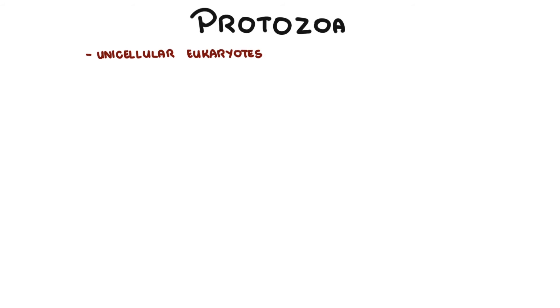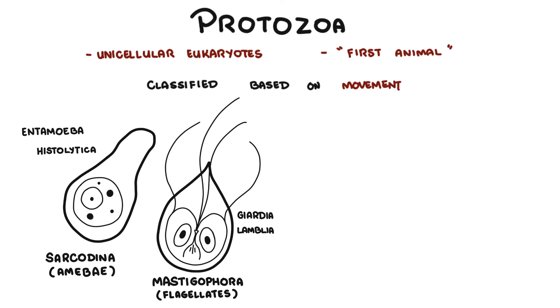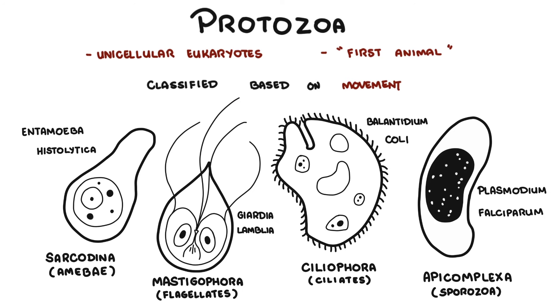In summary, protozoa are a type of unicellular eukaryote, known to be among the first living animals in the world. They are eukaryotic because they have a true membrane-bound nucleus, but they have no cell wall. They are classified into four groups based on how they move: the amoeba, flagellate, ciliate, and the sporozoa, which are actually non-motile. Thank you for watching.